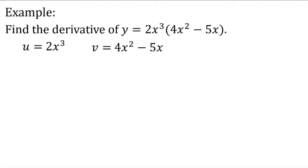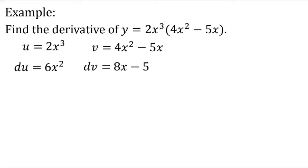du is the derivative of u, and dv is the derivative of v. Sean answers: du equals 6x squared. Very good. How about dv? Janina answers: 8x minus 5. Very good. So: u equals 2x cubed, du equals 6x squared, v equals 4x squared minus 5x, dv equals 8x minus 5. Now we will apply the product rule.